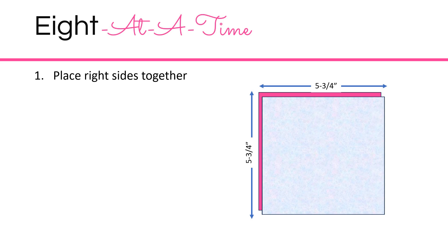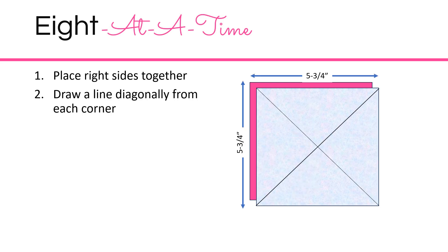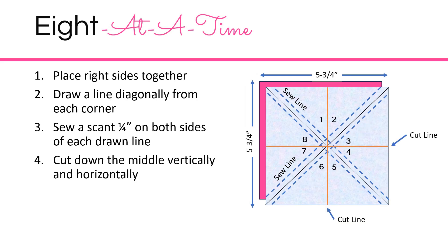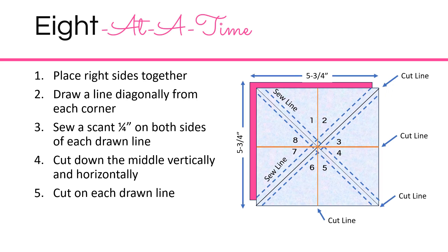For the eight at a time, place right sides together and draw a line diagonally from corner to corner. You're going to sew a scant quarter of an inch from that line on both sides, on both lines. Then you will cut right down the middle vertically and across horizontally, and then also cut on each of those drawn lines. Then press open.